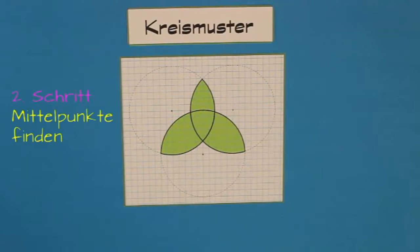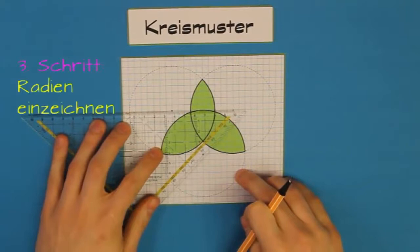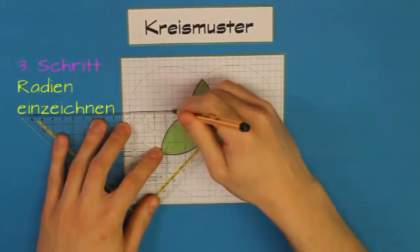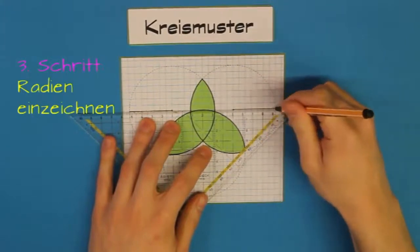Und der dritte Schritt, das ist wieder einfach. Da zeichnen wir einfach die Radien ein. Also wir verbinden den Mittelpunkt eines Kreises mit der Kreislinie. Aber das wisst ihr ja. Machen wir das gleich einmal.